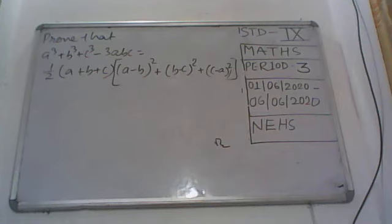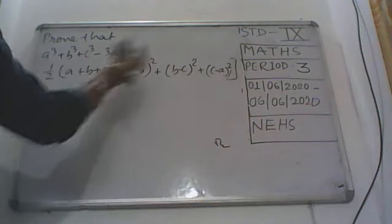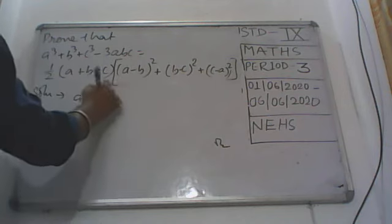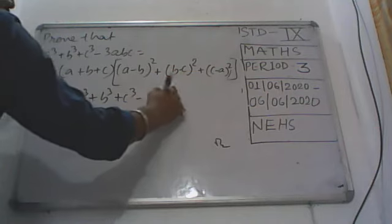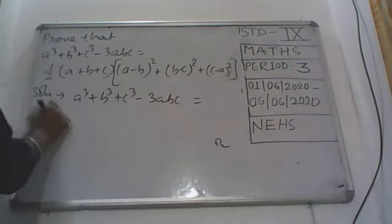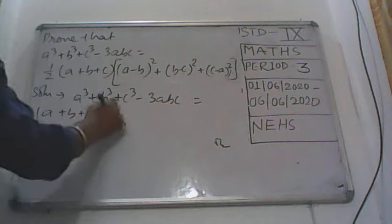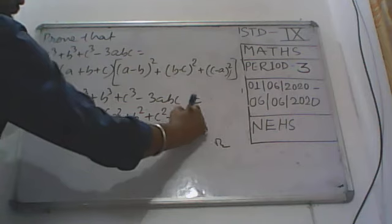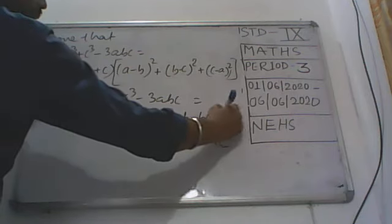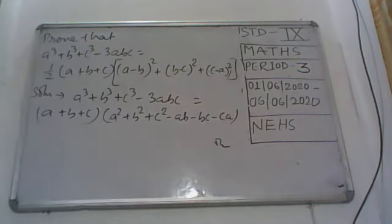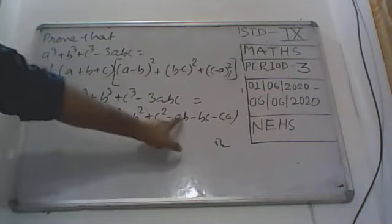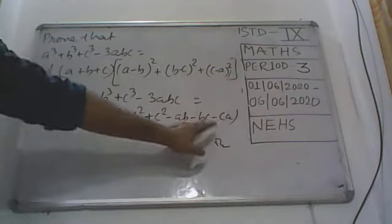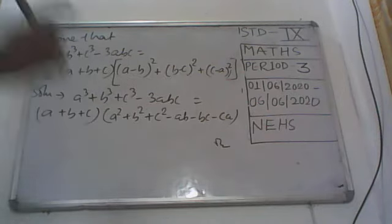Simply, first of all as they have given a cube plus b cube plus c cube minus 3abc, I will write that formula. A cube plus b cube plus c cube minus 3abc equals a plus b plus c, times a square plus b square plus c square minus ab minus bc minus ca. Now we need a minus b whole square, which means I need a 2ab term. We need b minus c whole square, meaning I need minus 2bc.